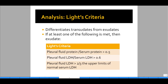How do you determine whether it's a transudate versus exudate? We use Light's criteria. Light's criteria states that if any of the following is met, we have an exudate: (1) pleural fluid protein divided by serum protein is greater than 0.5; (2) pleural fluid LDH divided by serum LDH is greater than 0.6; (3) pleural fluid LDH is greater than two-thirds of the upper limit of normal for your laboratory serum LDH. If any one of these is satisfied, it's an exudate; otherwise, it's a transudate.